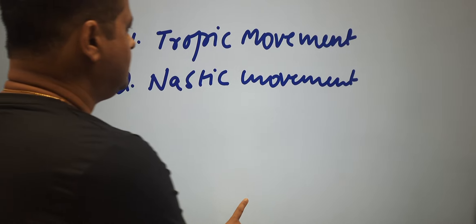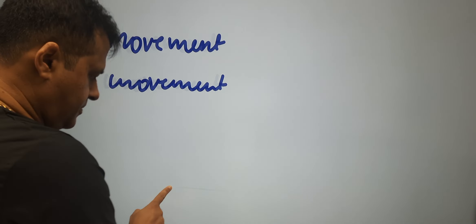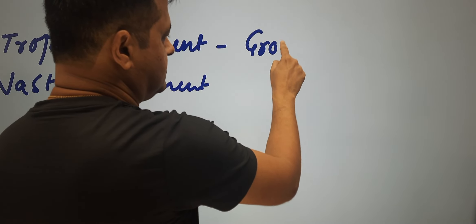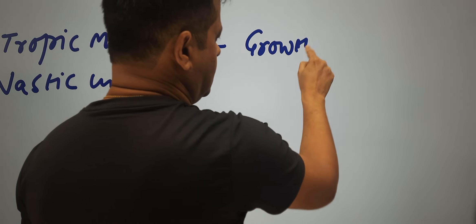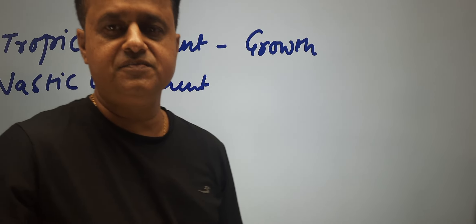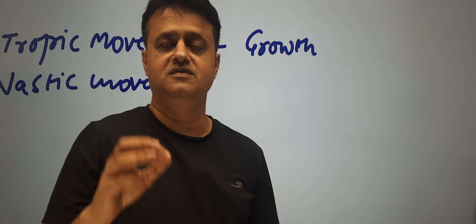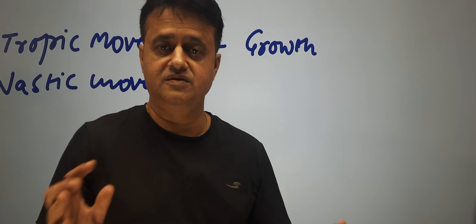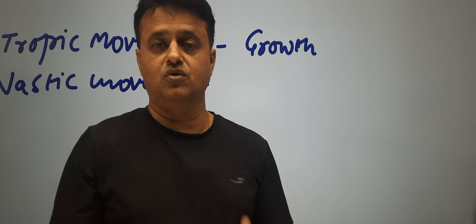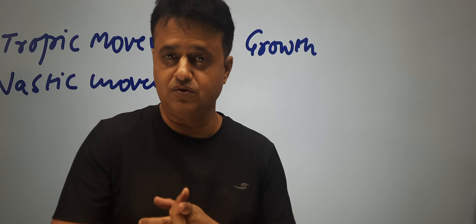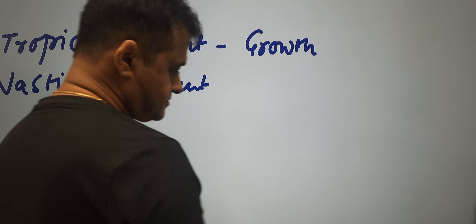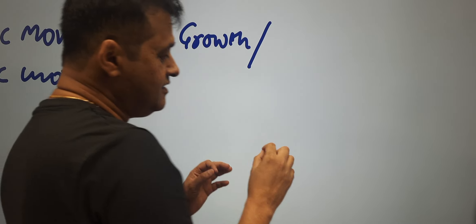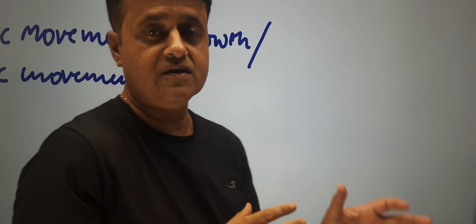Let us understand what tropic movements are. Tropic movements are essentially growth movements. If there is a tropic movement, the plant is actually growing — a part of the plant is growing. So tropic movements are growth movements, and the direction of that growth is influenced by the direction of the stimulus.